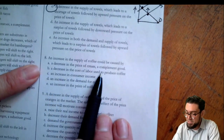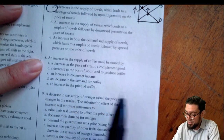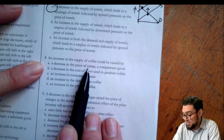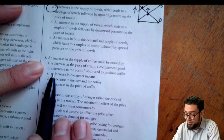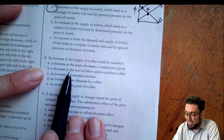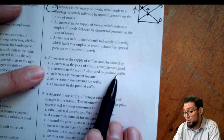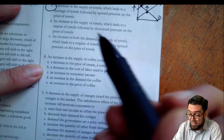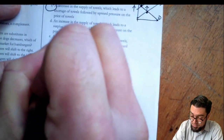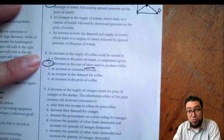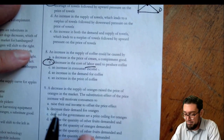Number eight: an increase in the supply of coffee could be caused by a decrease in cream? No, that won't change supply. A decrease in the cost of labor to produce it? Yes — that could increase the supply because labor is a factor used to produce the thing.